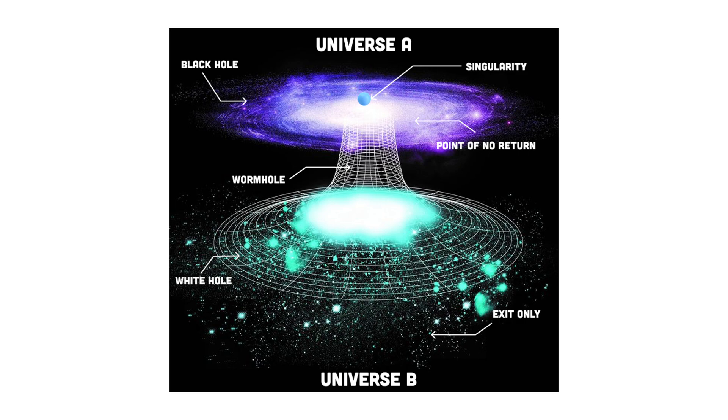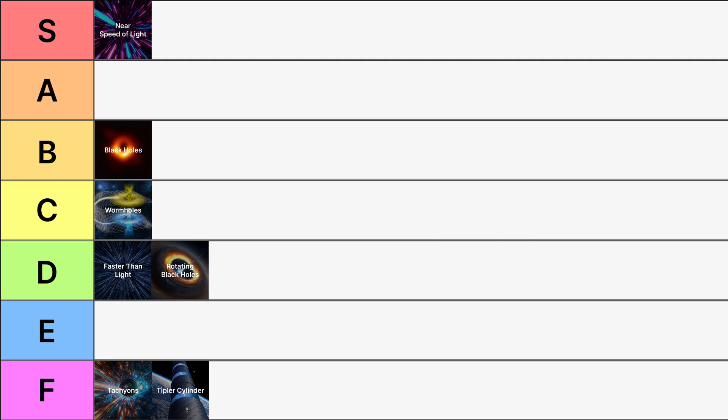Matter sucked into the black hole could be ejected from the white hole in a different region of spacetime or even a different universe. This could potentially allow for time travel as well. Just like wormholes, we haven't actually observed any white holes yet. They're still theoretical, although both black holes and white holes are valid mathematical solutions to Einstein's field equations in his theory of general relativity. I'm going to give white holes a D-tier ranking.